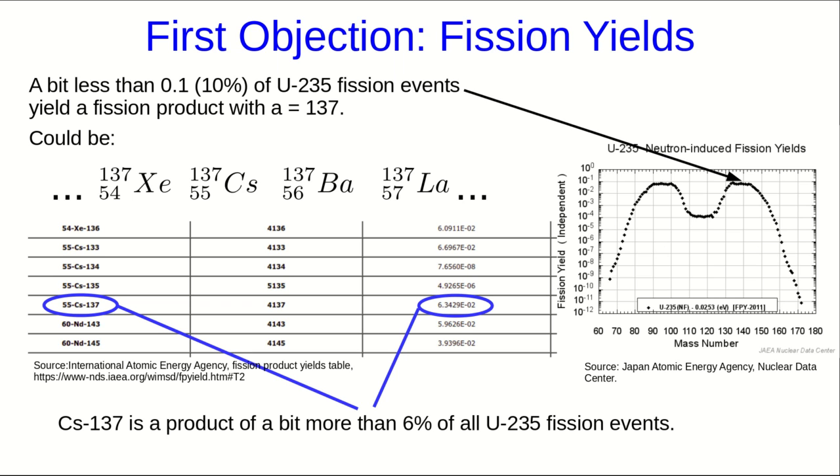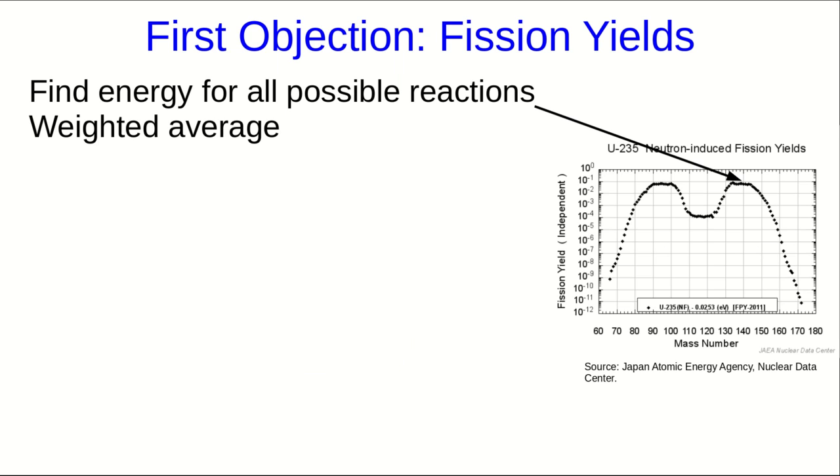And so, for example, here's a portion of a chart showing that about 6% of all U235 fission events result in cesium-137. Once you compile all of these and the energies of all the possible reactions, what you should do is a weighted average of all of them. I did not do that. And so this estimate is wrong.